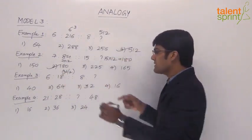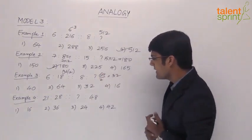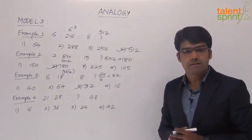Now what is 8 square? 64. 64 by 2 is how much? 32. Is 32 there? Yes, 32. So we can now say that third option is the answer for this question.